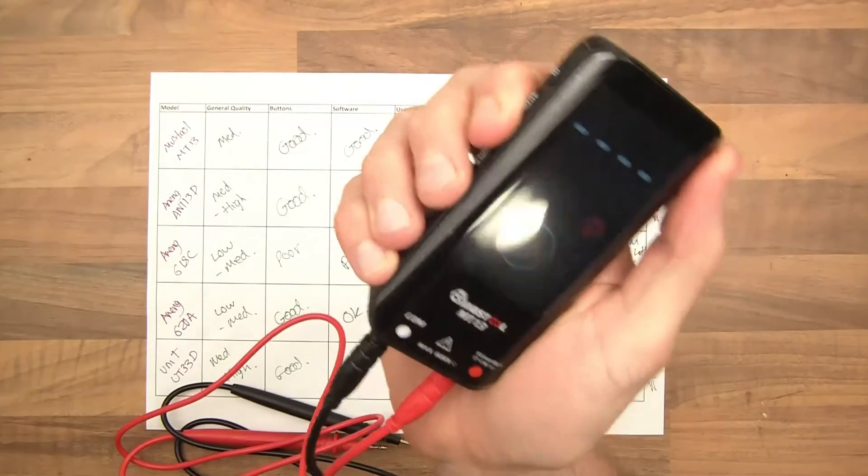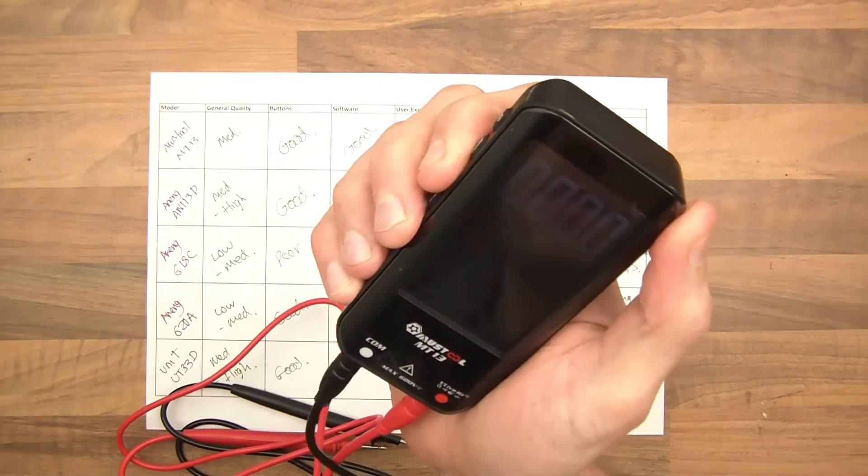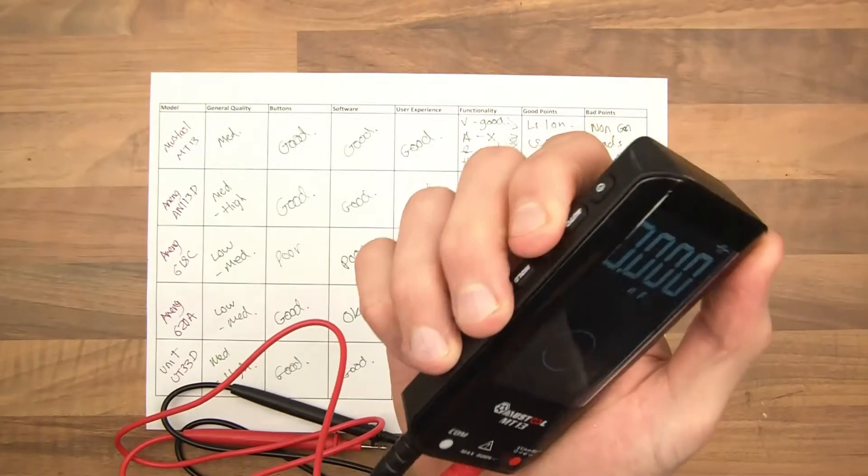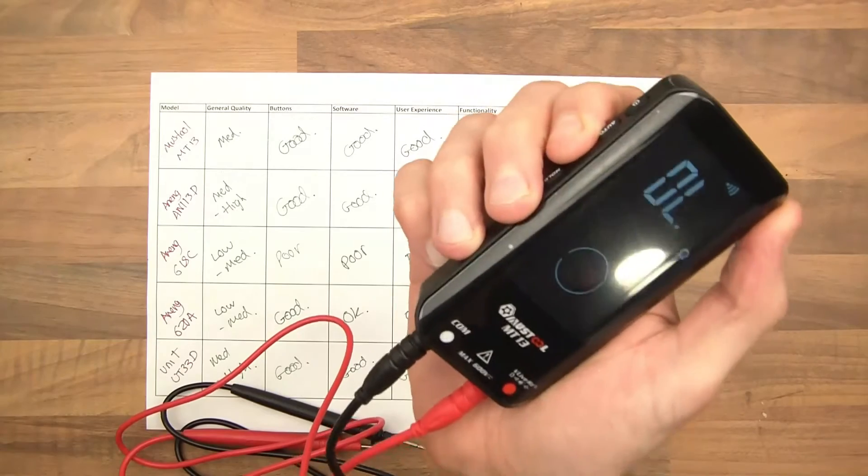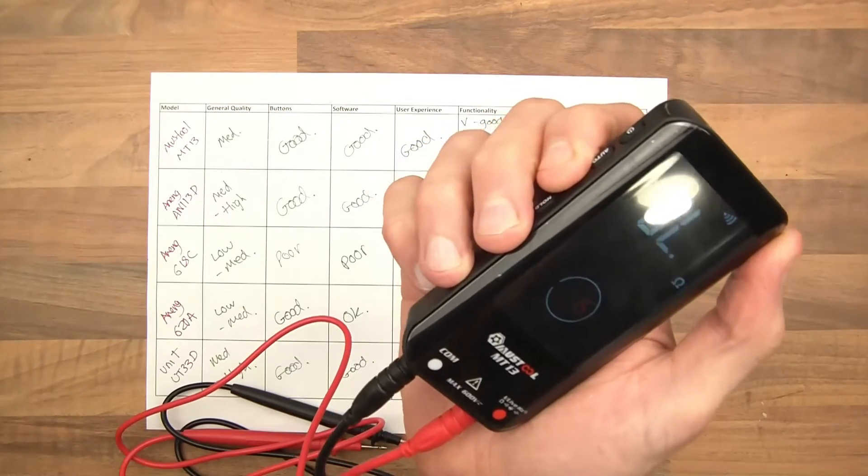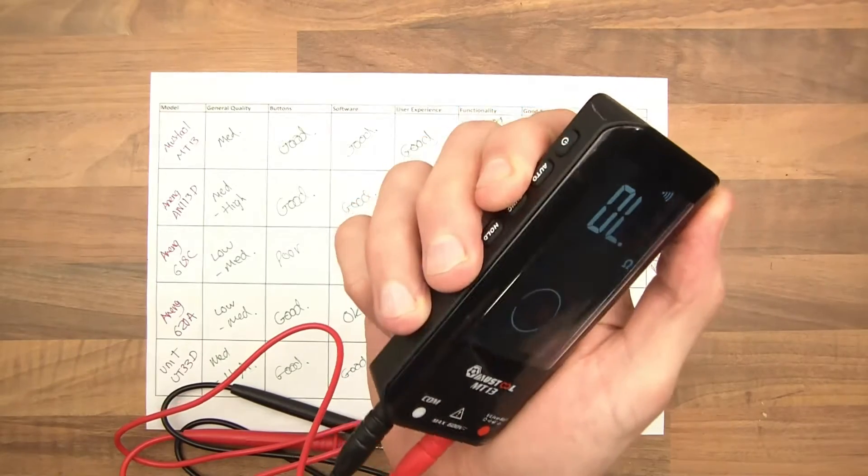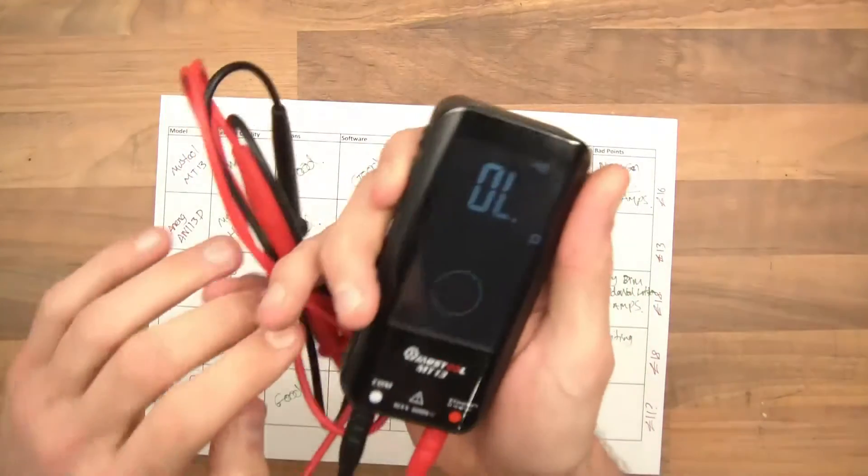The software on it is quite good. You can apparently check capacitance, although it doesn't really work. It's not accurate. But other than that, it's fairly good. It can't check amperage either. Which is a bit of a deal breaker, unfortunately, for this particular multimeter.